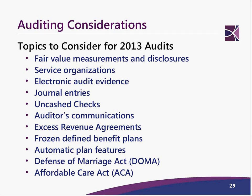One of the difficult things in meeting Level 3 disclosure requirements is what's called 'unobservable inputs' — the factors used by a valuation firm that need to be disclosed. It's somewhat subjective but quite extensive in terms of requirements, and it can be very difficult and frustrating to get your hands around all that information. If you're sensing that frustration in trying to get that information, that's why.